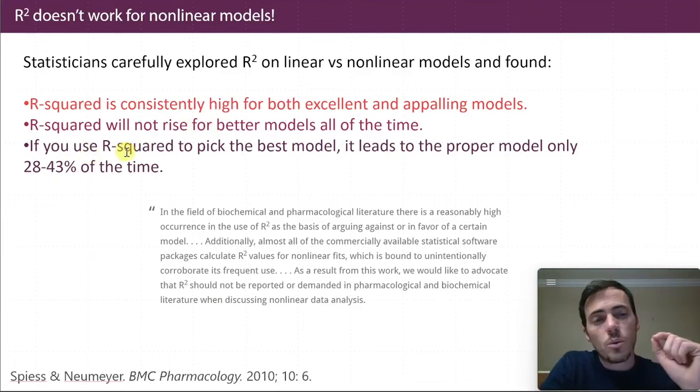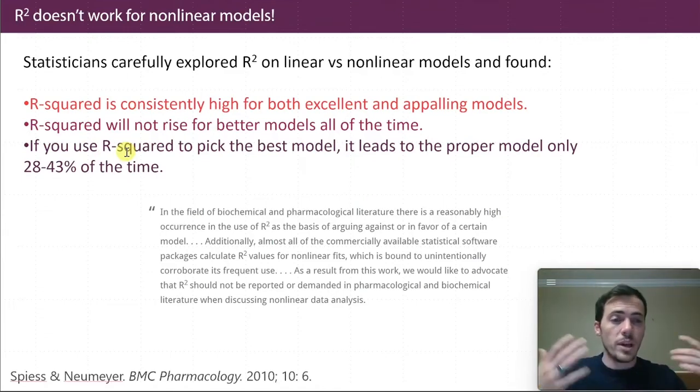And then it says, if you use the R squared to pick the best model, it leads to the proper model only, you know, less than half the time, you know, 28 to 43% of the time. So that's a problem.